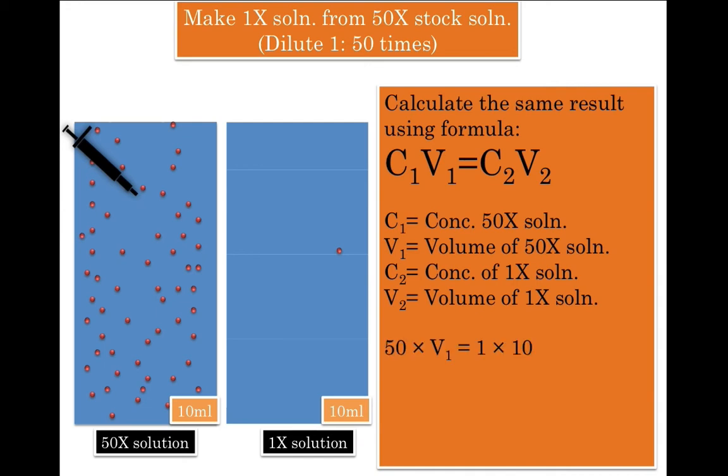So according to the formula, 50 times V1 equals 1 times 10. We will take 50 on the other side of the equation and we get 1 times 10 divided by 50, which will give us 0.2 ml.